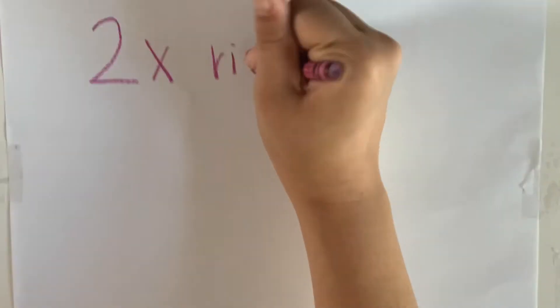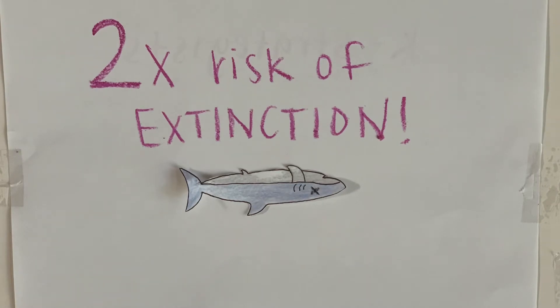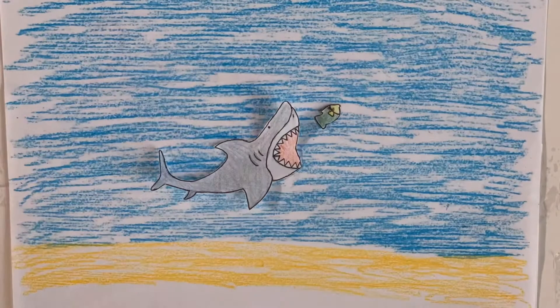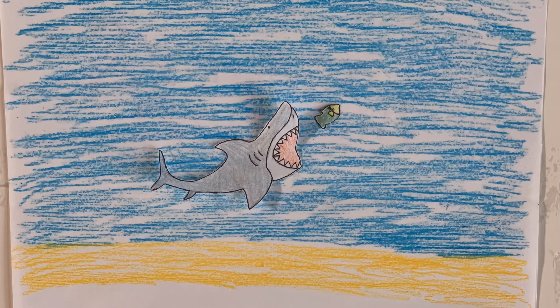Sharks actually face twice the rate of extinction from overfishing than other fish in the ocean due to current global fishing practices. This is a serious problem for our oceans because sharks are apex predators. They control the whole food chain and maintain balance. Without them, marine ecosystems are left vulnerable and are much less robust.